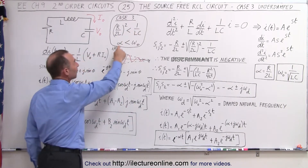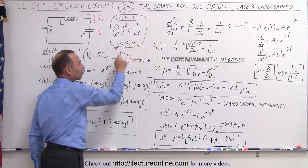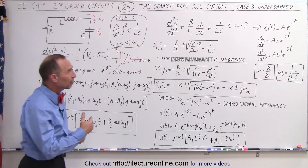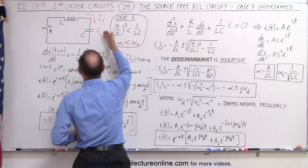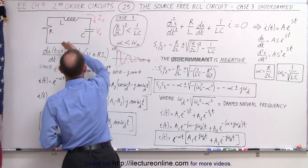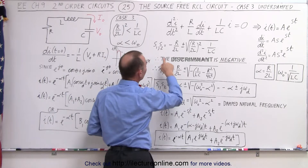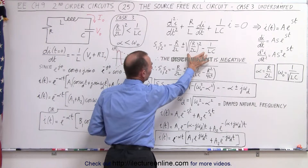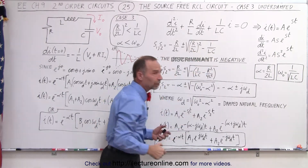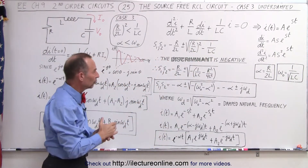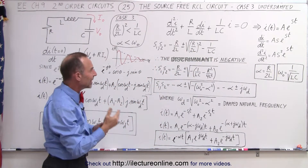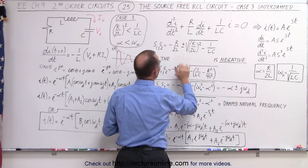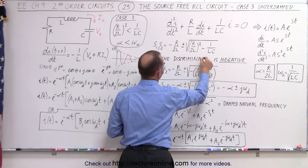In other words, the damping factor is smaller than the natural frequency of the circuit. If we try to solve the differential equation representing the voltages around the circuit, we end up with the two solutions to the characteristic equation where the contents of the radical are less than zero. The discriminant is negative.